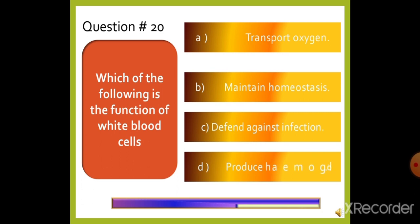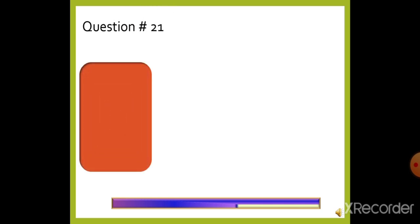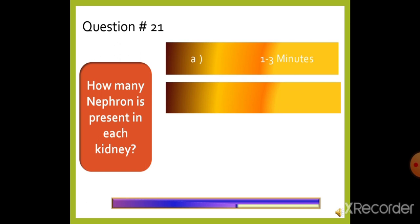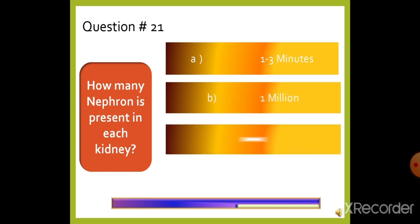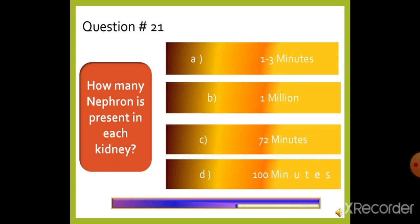Question 21: How many nephrons are present in each kidney? There was a mistake with the first option. The right answer is option B, 1 million nephrons are present in each kidney.